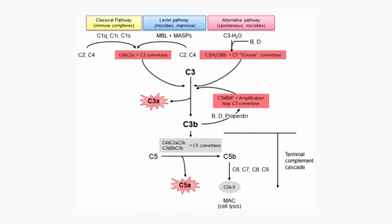Usually, a complement protein has two subunits: CA (the smaller subunit) and CB (the larger subunit). In the classical pathway, the first protein to get activated is C1, which has Q, R, and S as different structural units. C1QRS binds to the FC region of the antibody. C1 then recruits C4, and C4 cleaves to form C4A and C4B. C4B attacks on the membrane of the antigen, whereas C4A acts as an anaphylatoxin.